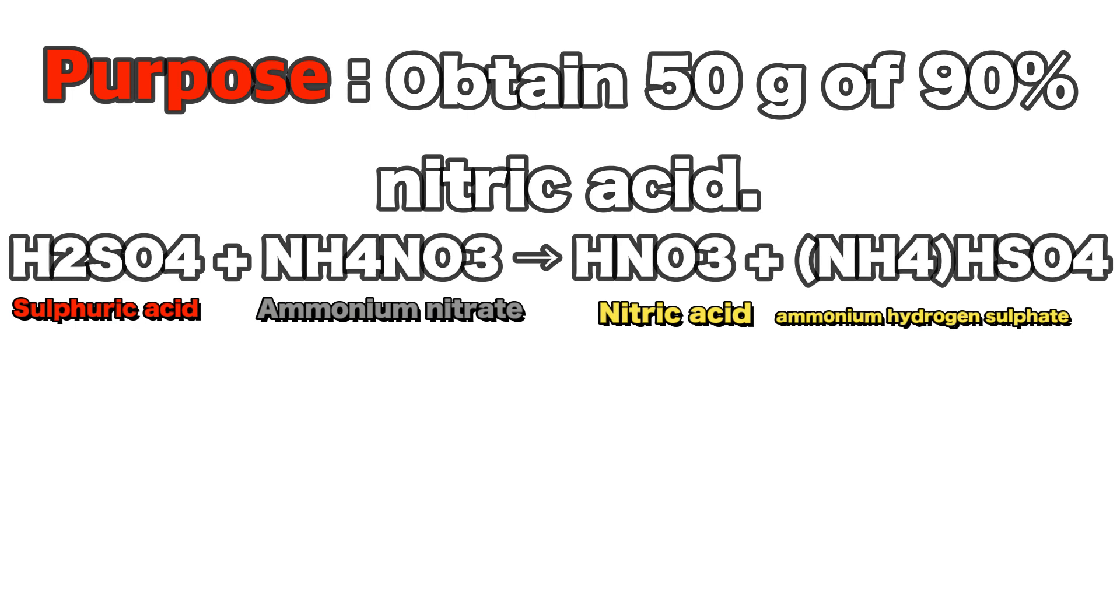In order to obtain 50 grams of 90% nitric acid, I have to calculate how much sulfuric acid and ammonium nitrate I have to prepare. First, I have to find gram per mole.